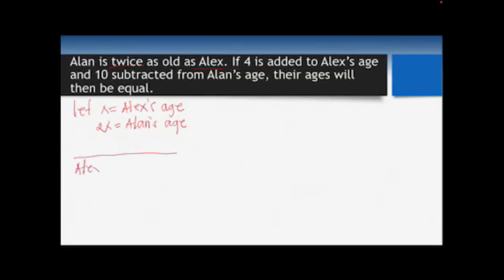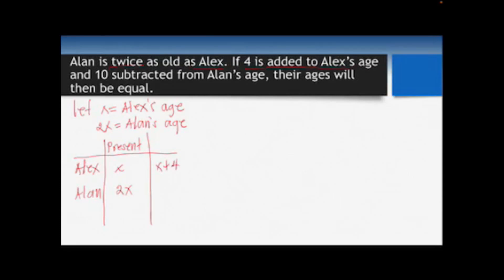Let's create a table with Alex and Alan. Their present ages are x for Alex and 2x for Alan. The second condition: if 4 is added to Alex's age, that gives x + 4; and 10 is subtracted from Alan's age, giving 2x − 10. The last condition states their ages will then be equal.